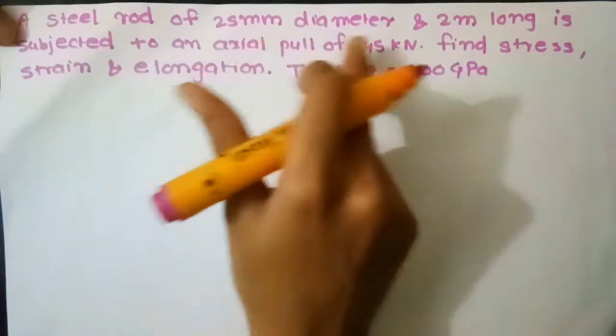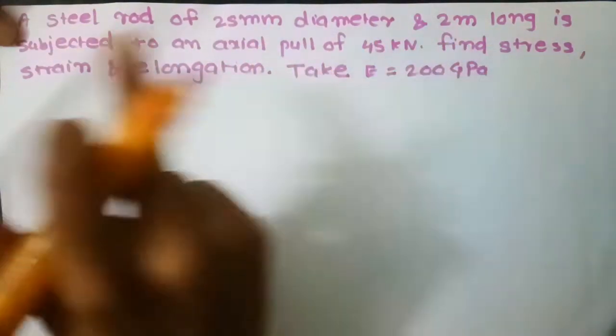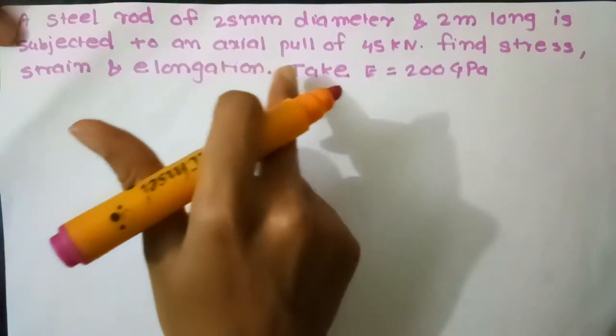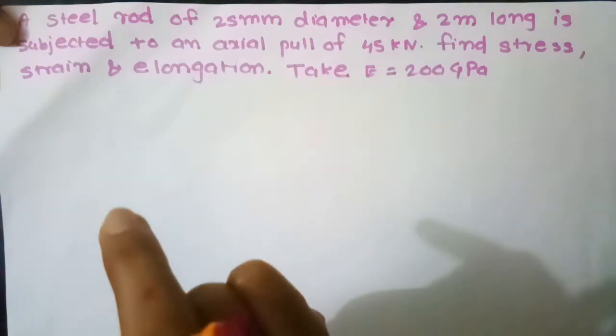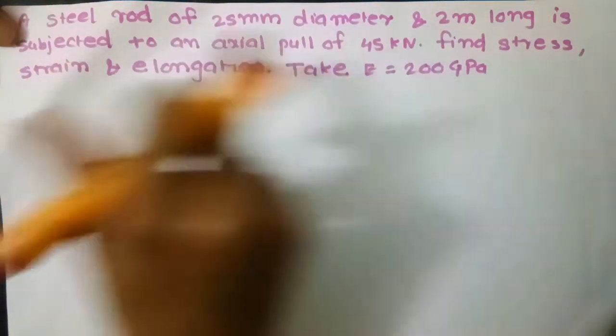A steel rod of 25 mm diameter and 2 m long is subjected to an axial pull of 45 kN. Find stress, strain and elongation. Take E equal to 200 GPa.